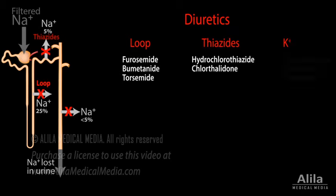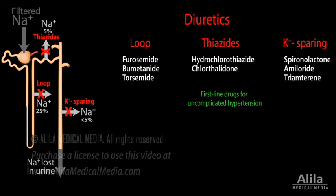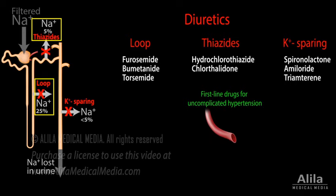Of the three classes of diuretics used for treating hypertension, thiazides are the most commonly prescribed. Thiazides act on the distal tubule of nephrons, which reabsorbs only a small portion of the sodium load, so their diuretic effect is less powerful than that of loop diuretics, which act on the thick ascending limb of the loop of Henle. However, thiazides also have a vasodilation effect by an unknown mechanism.